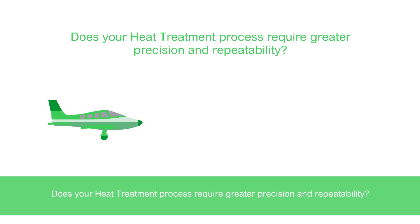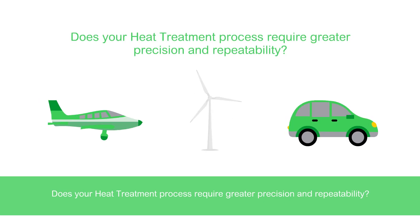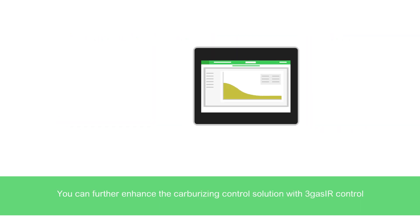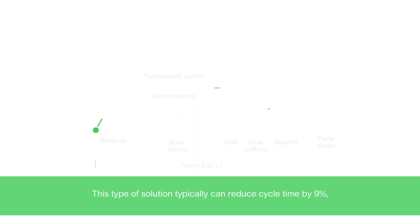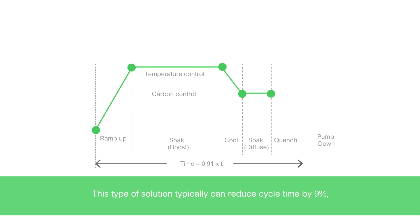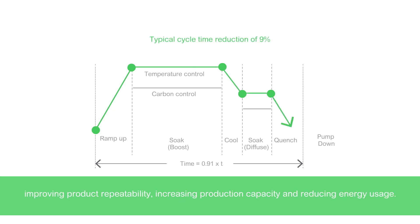Does your heat treatment process require greater precision and repeatability? You can further enhance the carburizing control solution with 3-gas infrared control to optimize probe readings and model-based online diffusion control to reduce case depth variability. This type of solution typically can reduce cycle time by 9%, improving product repeatability, increasing production capacity, and reducing energy usage.